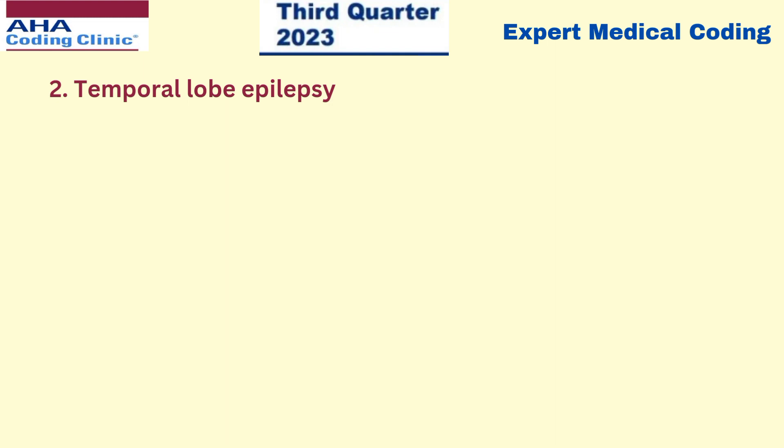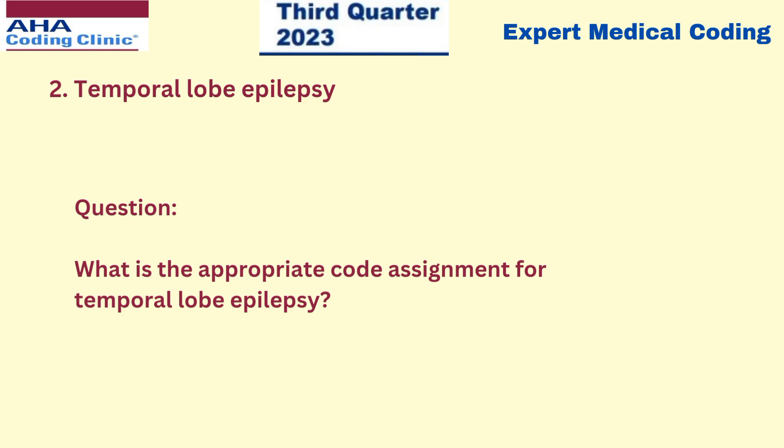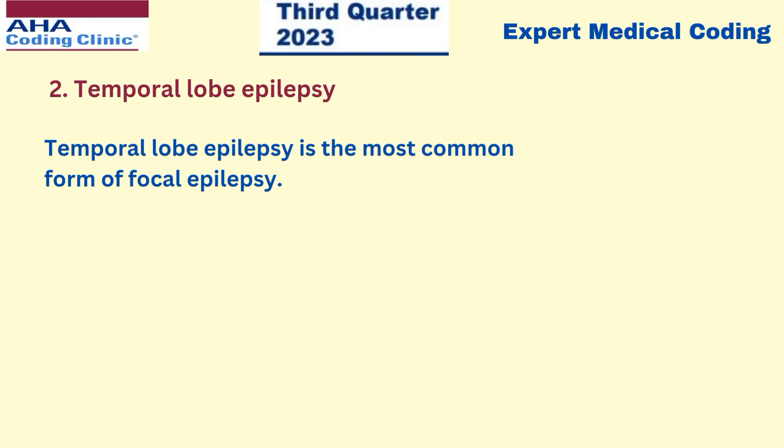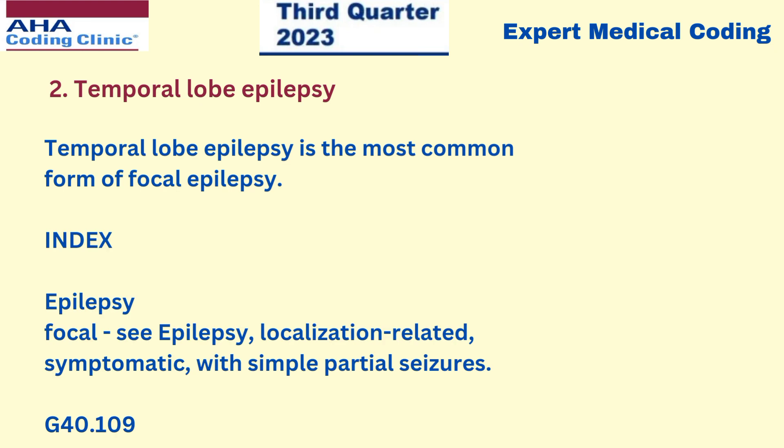The next scenario is temporal lobe epilepsy. The question is: what is the appropriate code assignment for temporal lobe epilepsy? Temporal lobe epilepsy is the most common form of focal epilepsy. If you go to the index and search under 'epilepsy, focal,' it will lead you to the cross-reference instruction for epilepsy, localization-related symptomatic with simple partial seizures, giving you code G4109. This is the exact code for temporal lobe epilepsy. So whenever you see temporal lobe epilepsy in a report, assign code G4109.